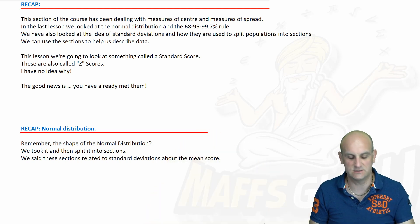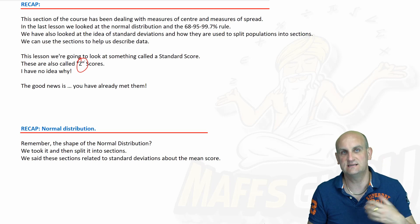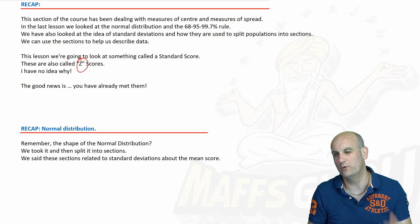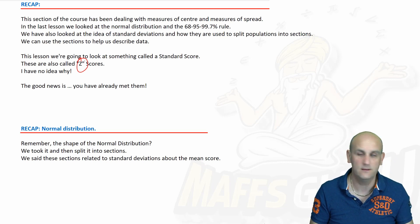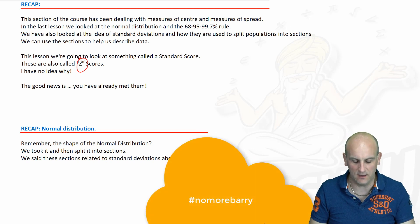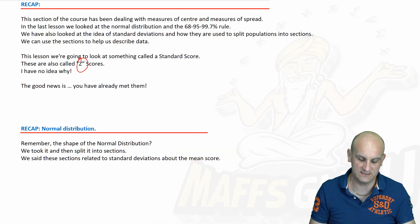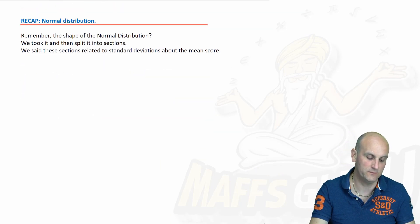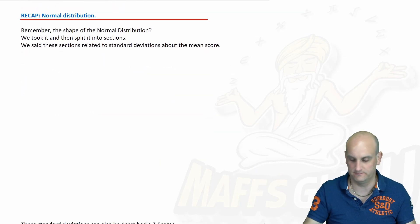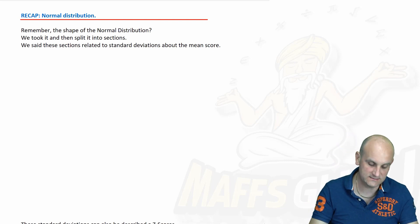We're going to deal with standard scores. Now, the first thing to notice, ladies and gentlemen, is that standard scores are also known as Z scores. Life couldn't be more complicated - you're calling it a standard score and you're calling it a Z score. But actually, believe it or not, you've already met them, just under a different guise.